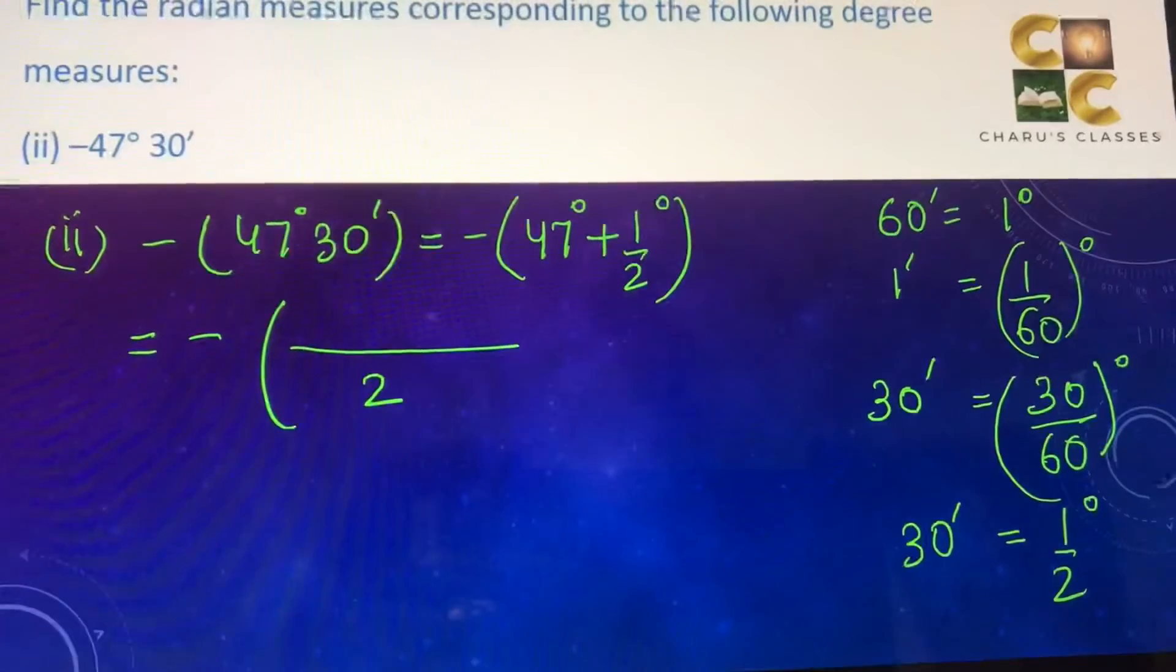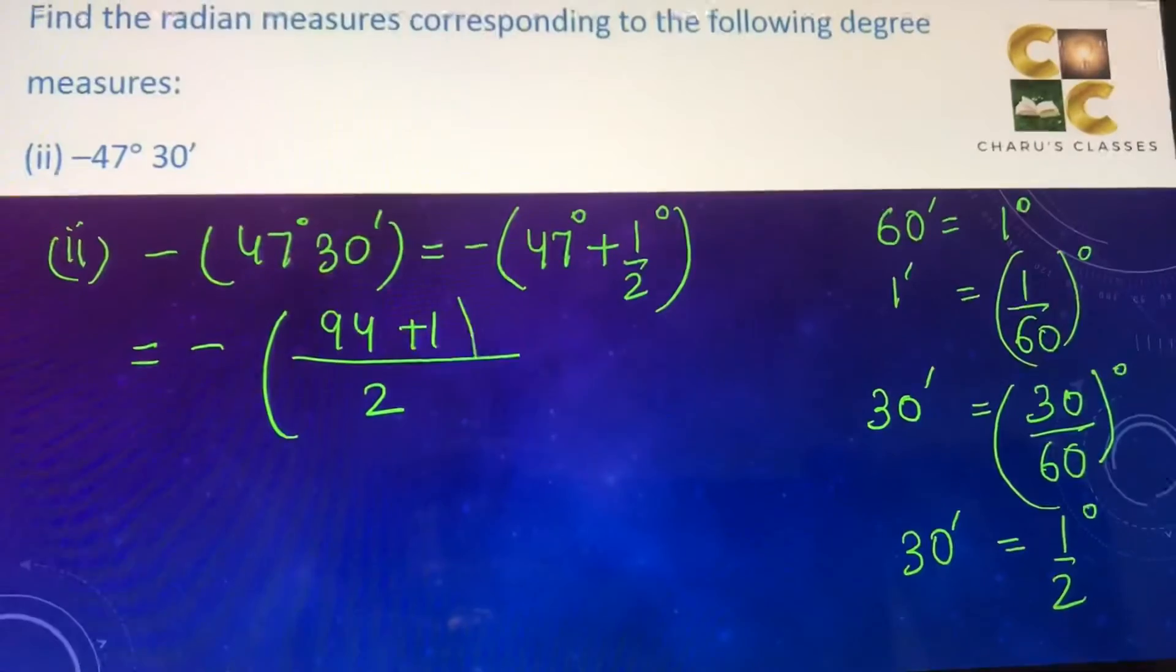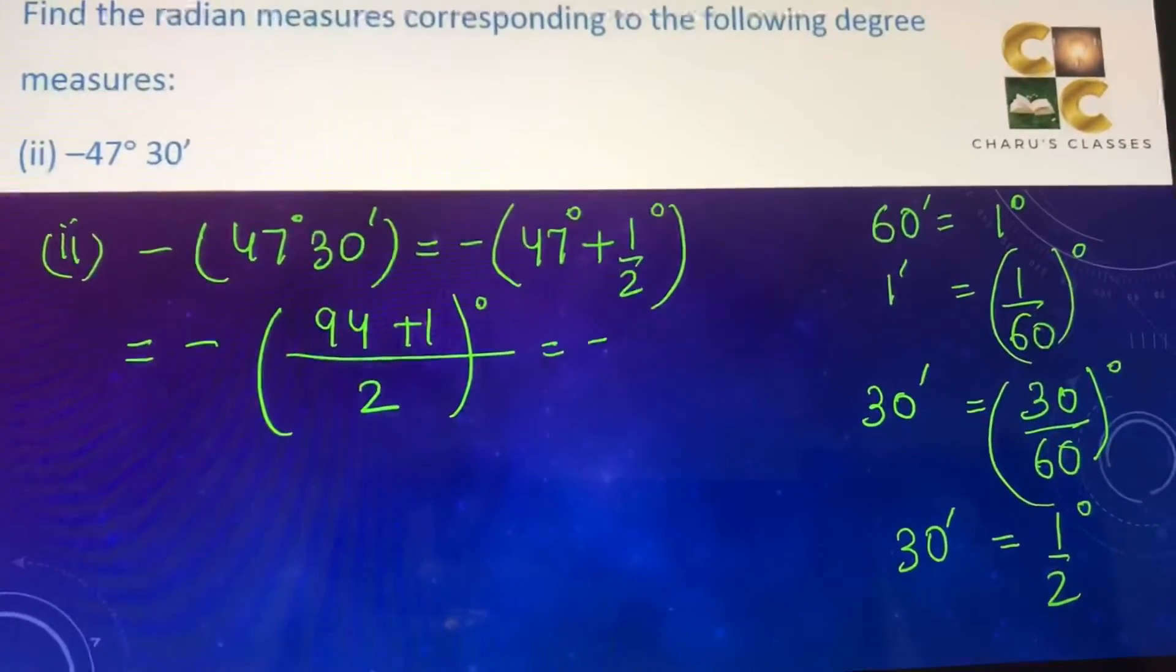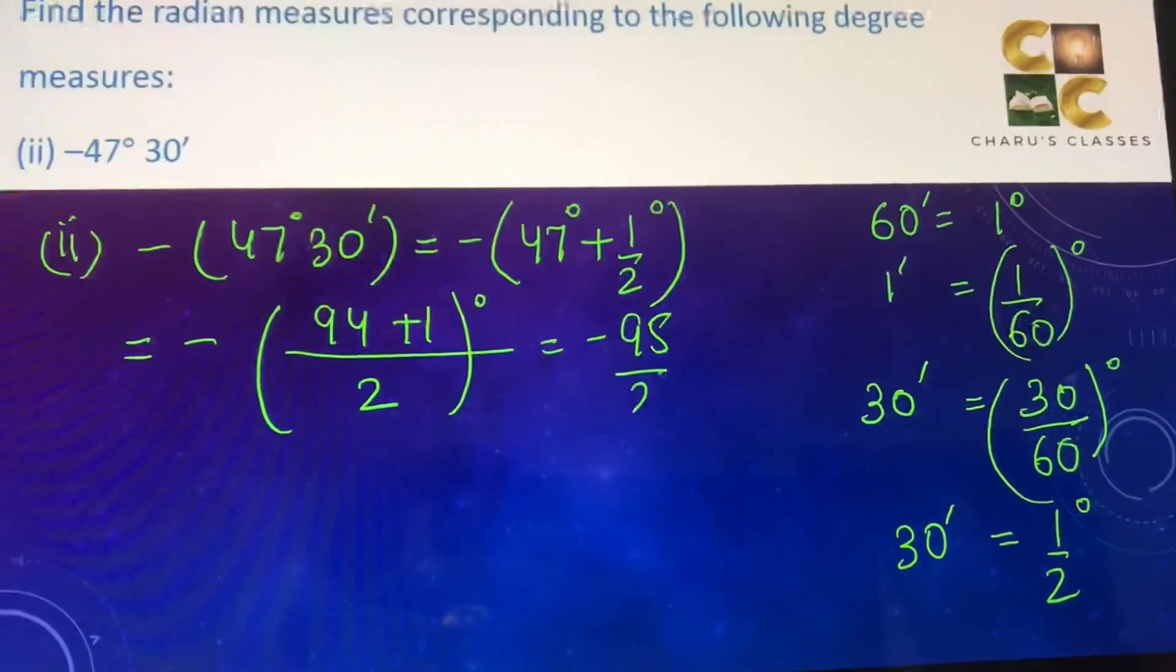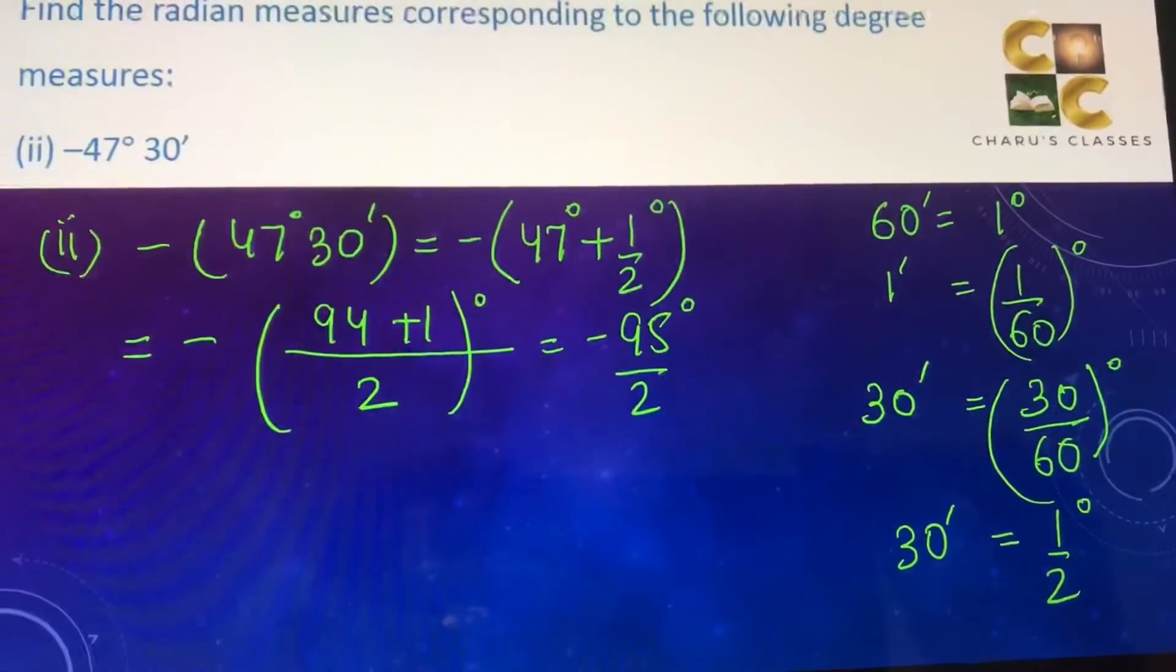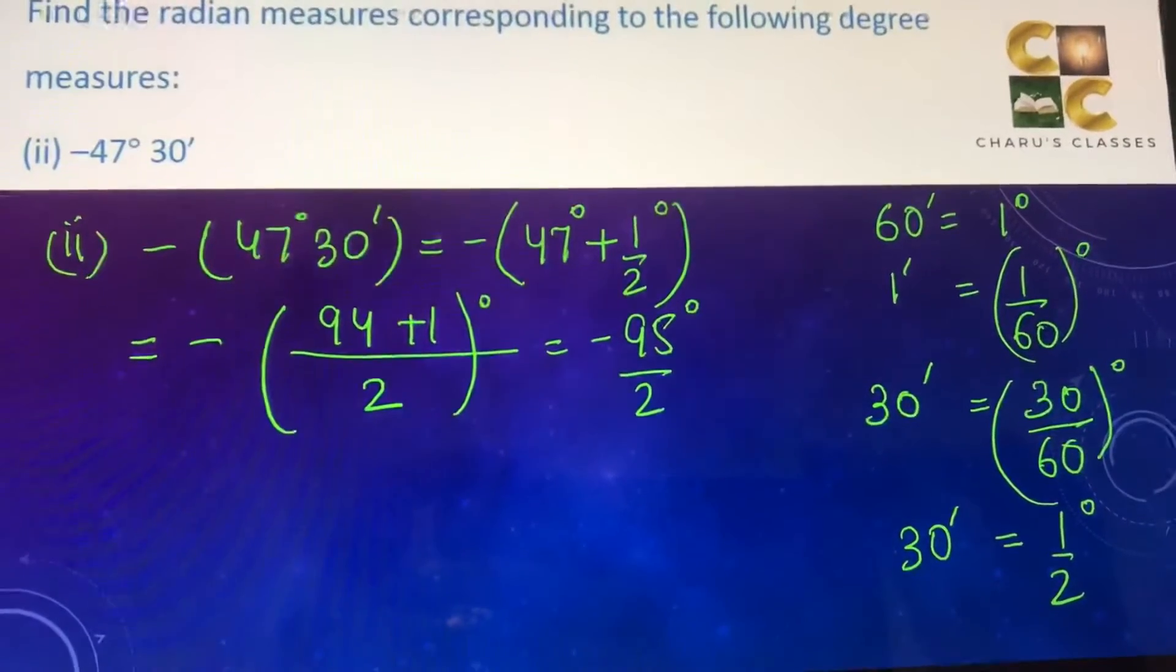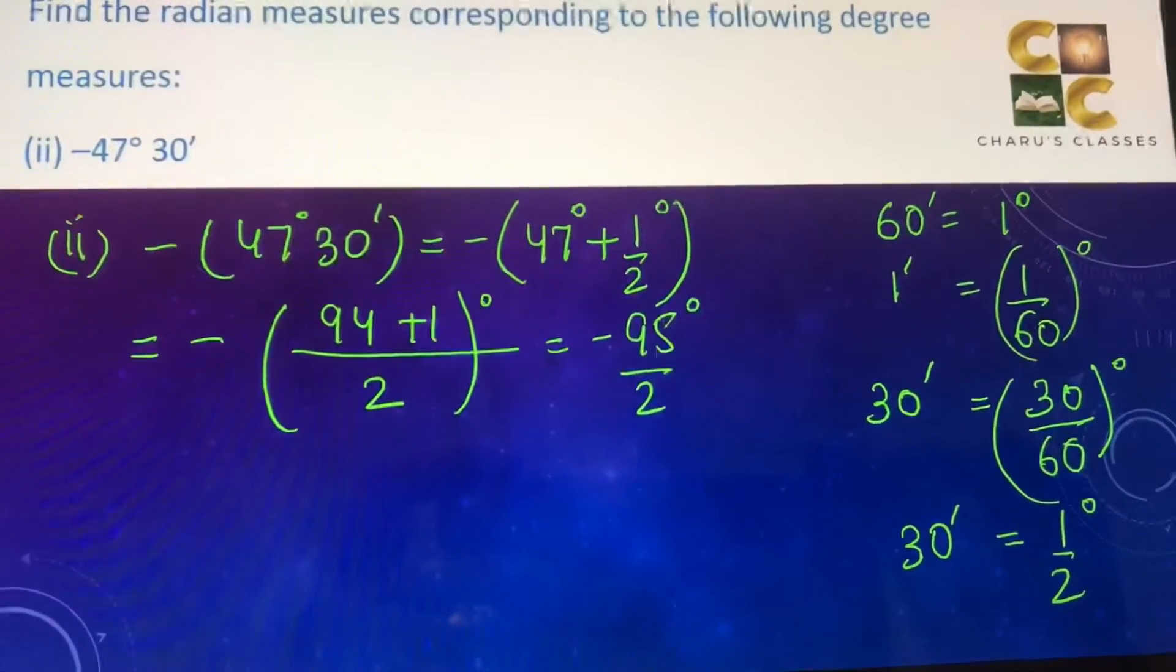For adding, 2 can be taken as the common denominator, so 94 plus 1 degrees. This is equal to minus 95 by 2 degrees. Now this is all converted into degrees, we still have to convert it into radians.